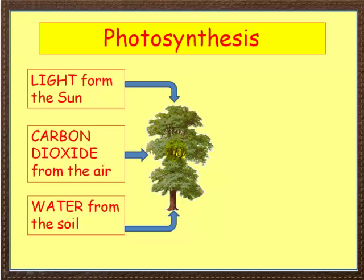Here is our plant again. Let's think about what the plant needs. The plant needs three things basically: light from the sun, carbon dioxide from the air, and water from the soil. Those are the three things a plant needs for photosynthesis.